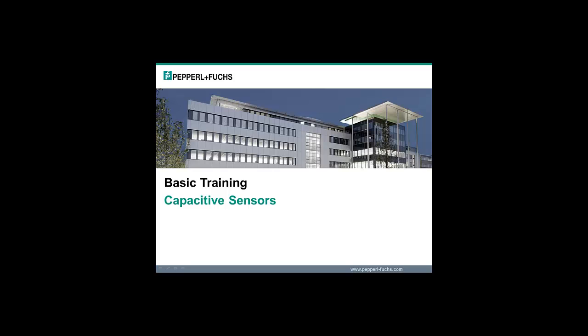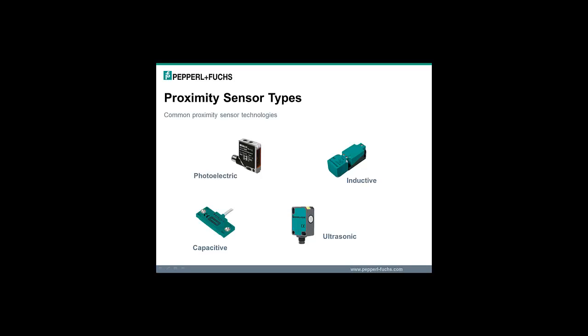Welcome to the Pepperel and Fuchs Basic Training for Capacitive Sensors. A proximity sensor is a generic term for sensors that detect material or objects within a defined sensing distance of the sensor.